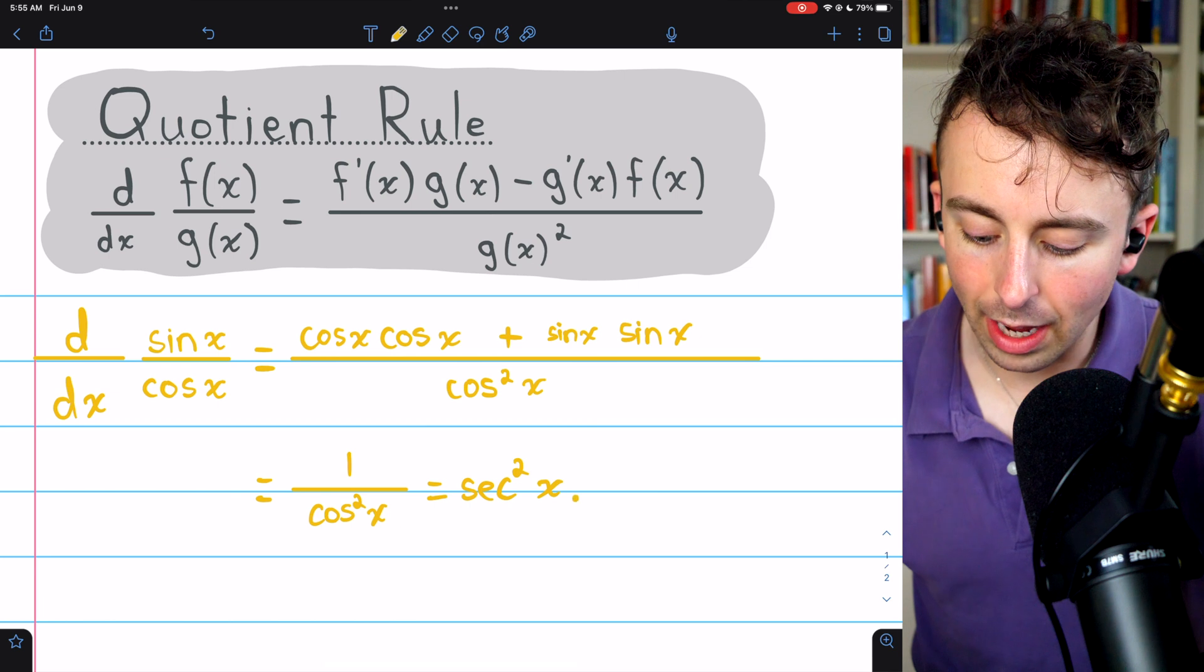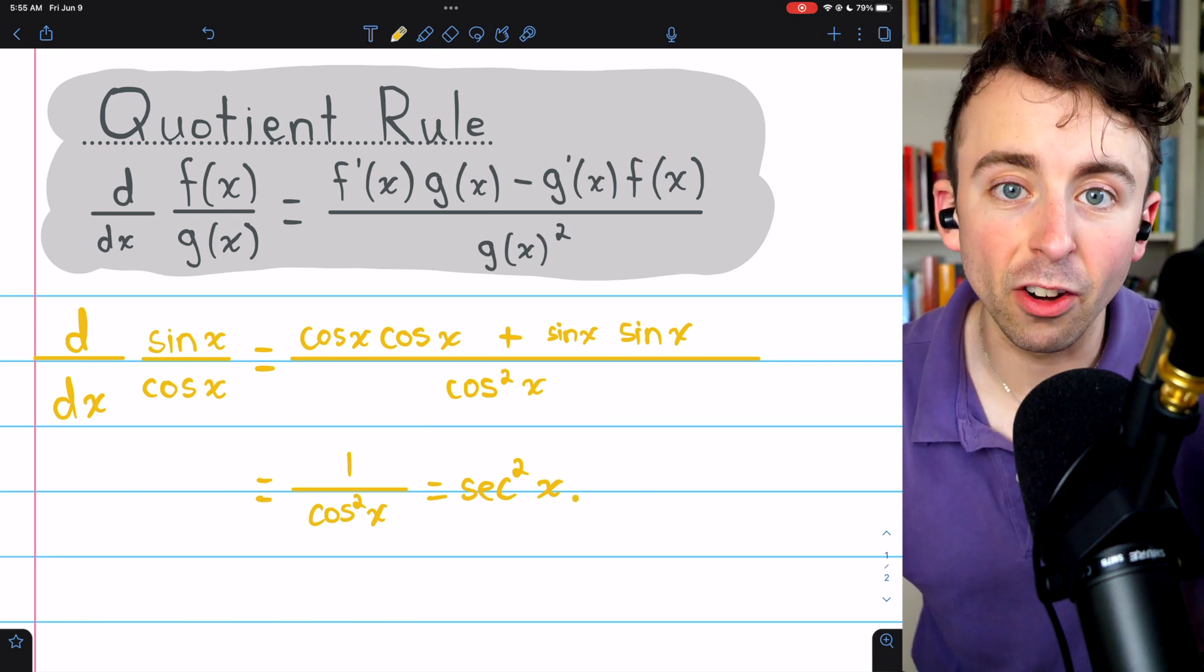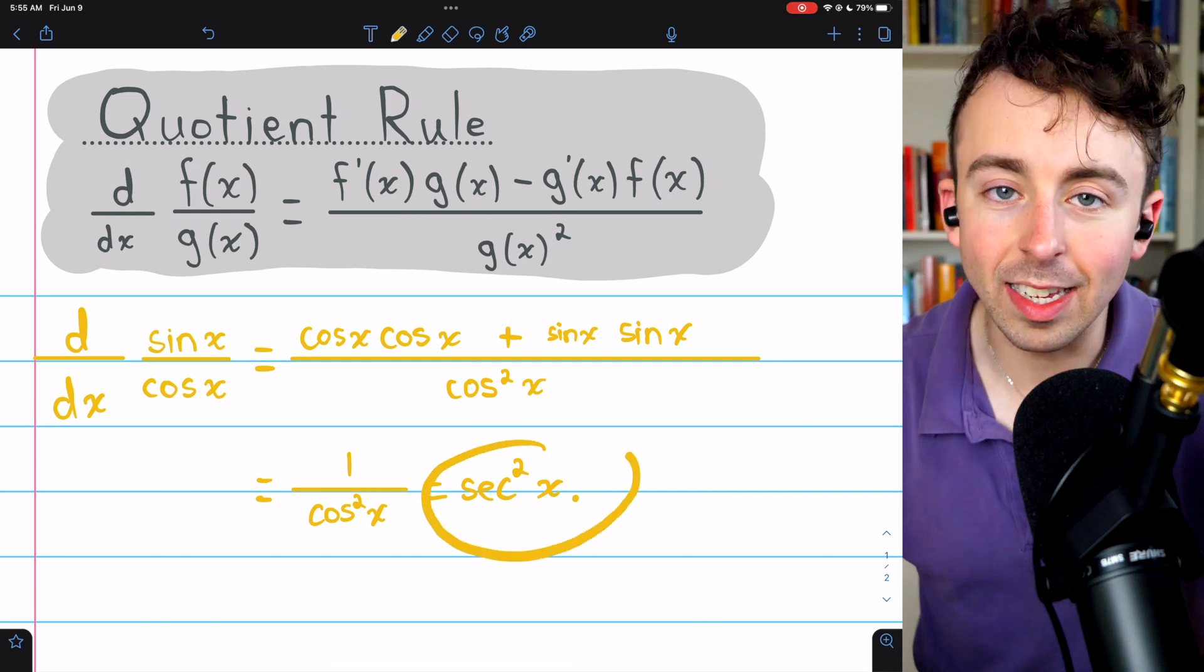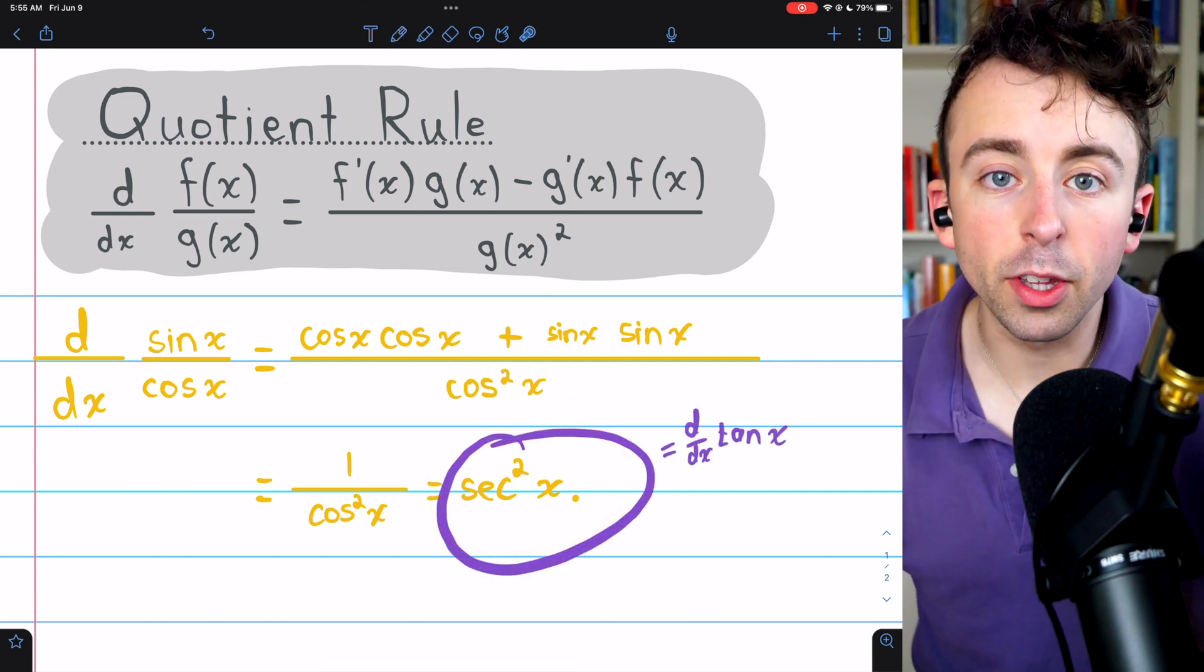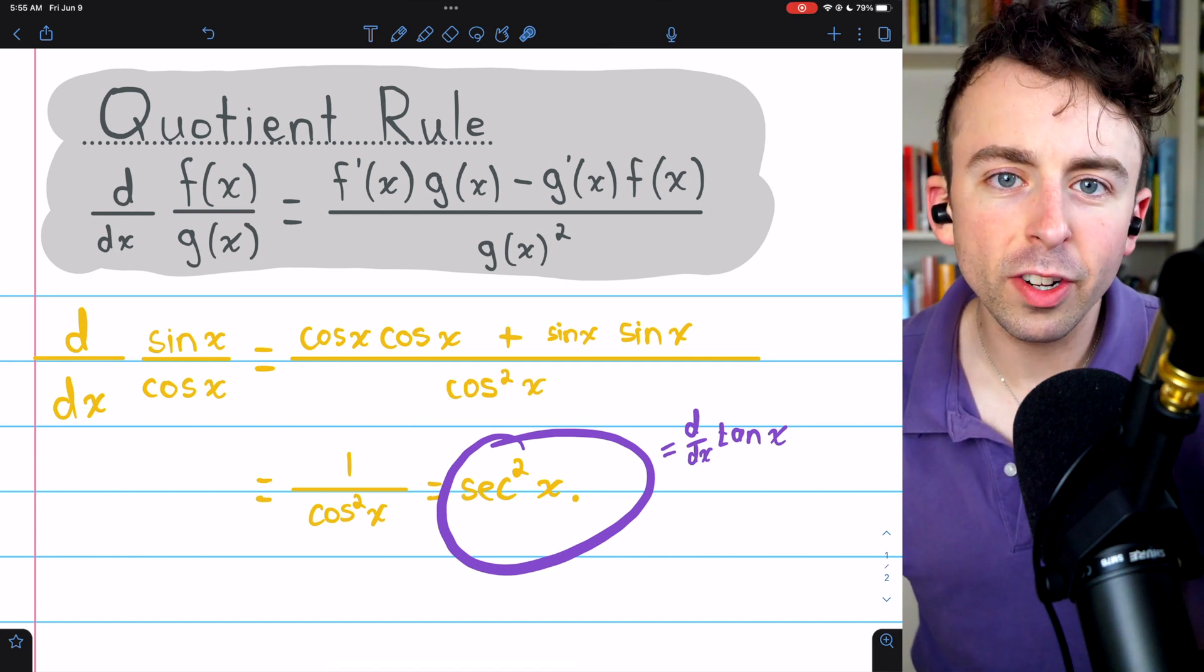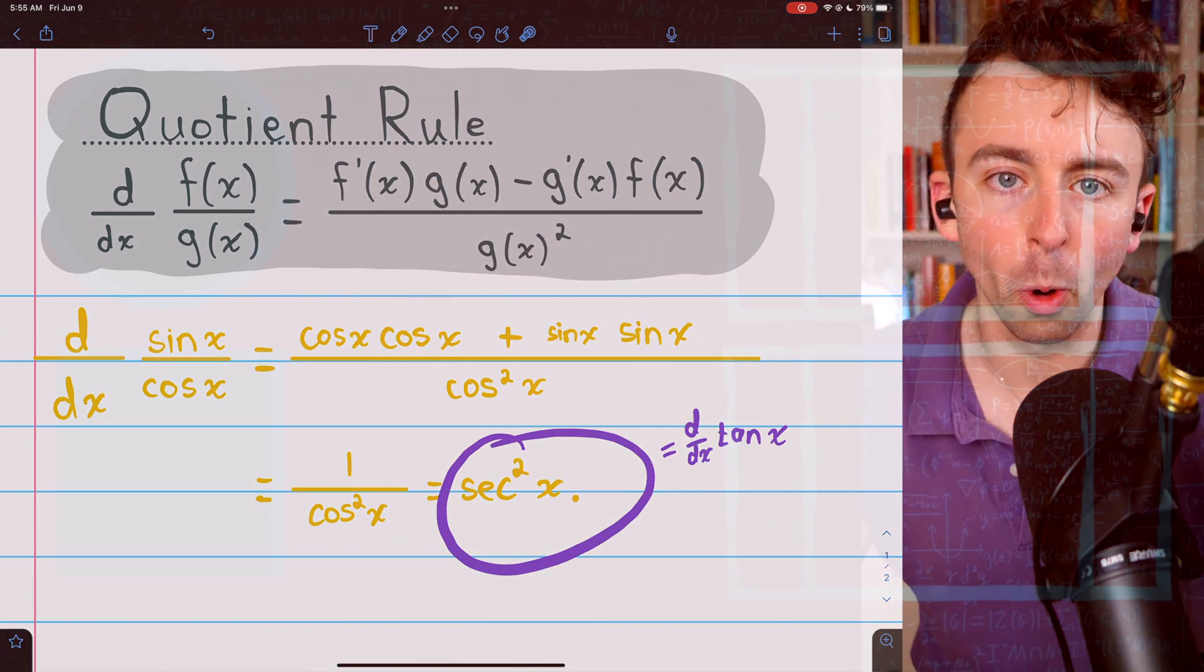So the derivative of sine over cosine, and thus the derivative of tangent of x is secant squared. So there you go. That's how you take this derivative using the quotient rule. Let me know in the comments if you have any questions and check out my calculus one exercises playlist in the description for more.